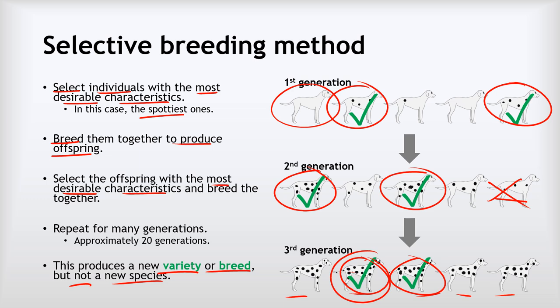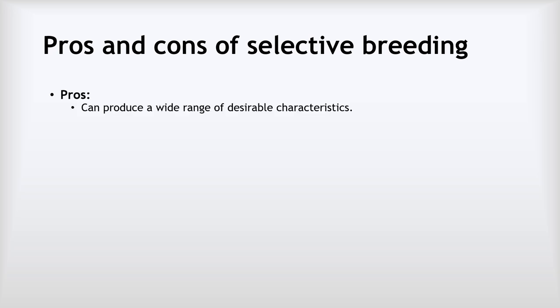This is generally how all selective breeding works: select the ones with the best characteristics, breed them together, raise the offspring, select the offspring with the best characteristics, and repeat again and again until you produce a new variety significantly different to what you started with. In terms of pros, selective breeding can produce a wide range of desirable characteristics, and we've got a lot to thank selective breeding for — virtually all the food we eat has come from this process.